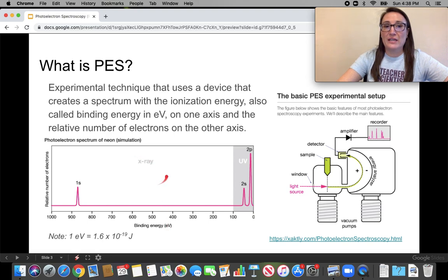This is just a simulation for the spectrum for neon. You can see that x-ray and UV are the types of photon energy that have to be sent in to remove an electron. So let's go through how this spectrum is built.